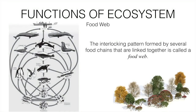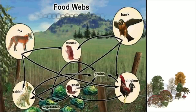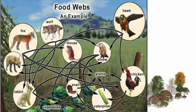A food web is the interlinking pattern formed by several food chains linked together. For example, vegetables are eaten by snails, snails are eaten by foxes or chickens, and chickens are eaten by foxes. This interconnected structure is called a food web, which can become quite complex.